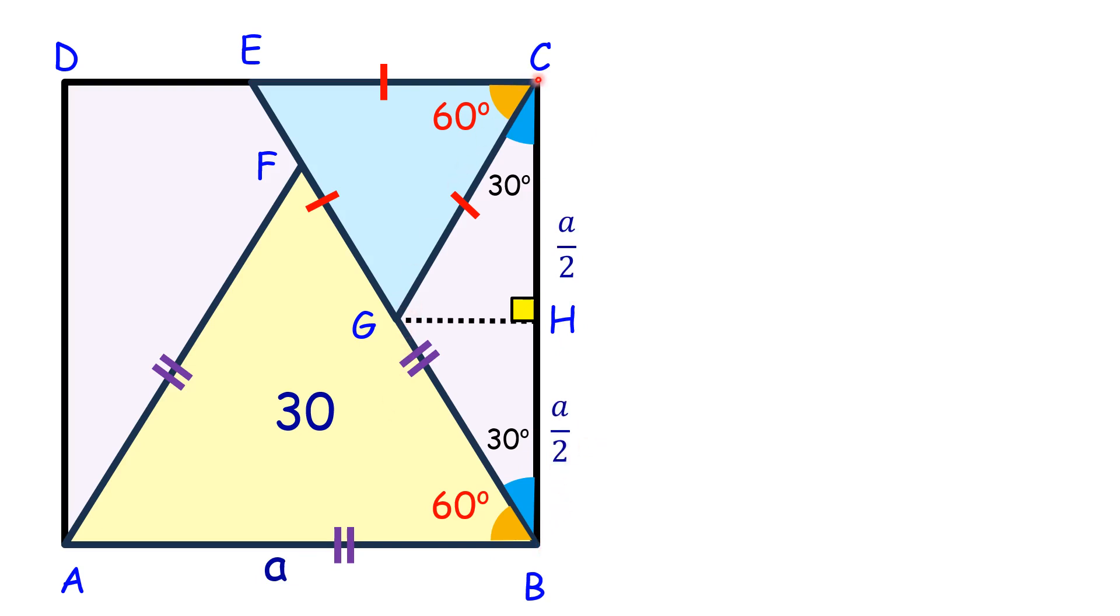In triangle CGH, applying trigonometry: CH equals CG times cos 30 degrees. Putting the values, CH is a/2, and cos 30 is √3/2. Solving this, we get CG equals a/√3.